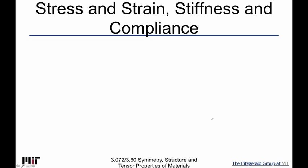So let's talk a little bit about what we have here. I'm going to take sigma_ij and relate that to my strain. This is a very important property. That relationship gives us what is called stiffness. And then I could write it the other way.